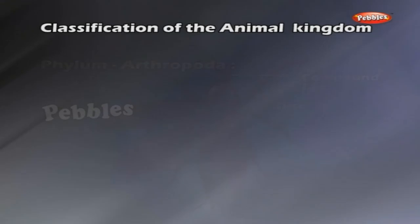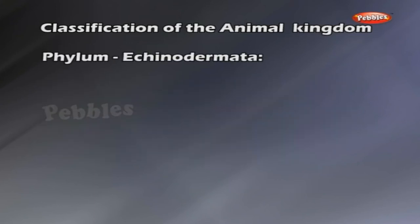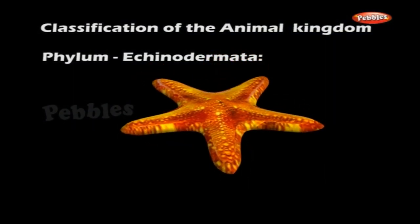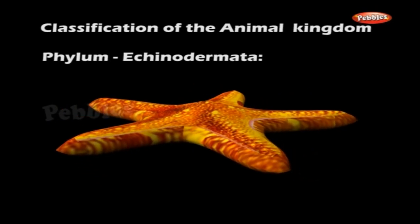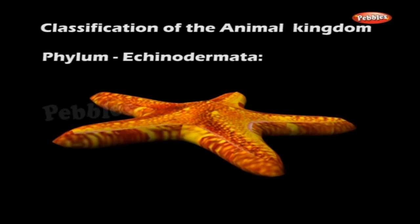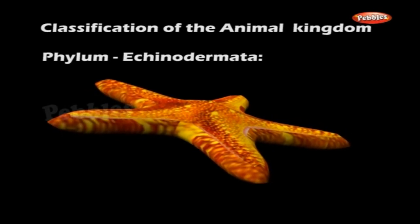Phylum Mollusca. Pila globosa, apple snail, Sepia, and octopus are examples of phylum Mollusca. They form the second largest group of animals. They are soft-bodied animals without segmentation. The body is divided into a head, muscular foot and visceral mass. The body is covered by a mantle and a shell. Phylum Echinodermata. Starfish and sea urchin are examples of phylum Echinodermata. The adults are radially symmetrical while the larvae are bilaterally symmetrical. The presence of spines on the skin is a characteristic feature. They have a water vascular system. Locomotion is with the help of tube feet.